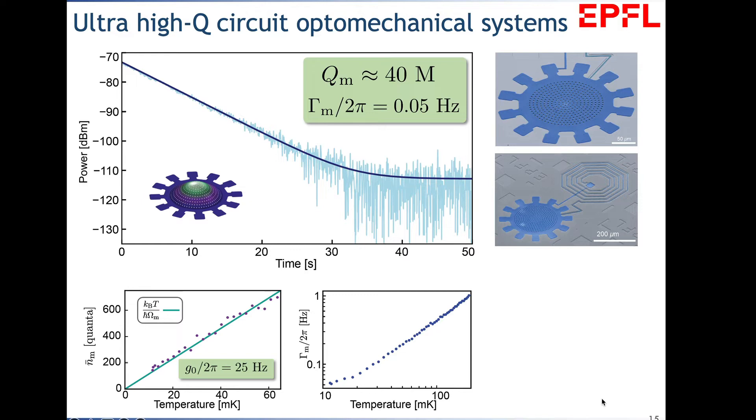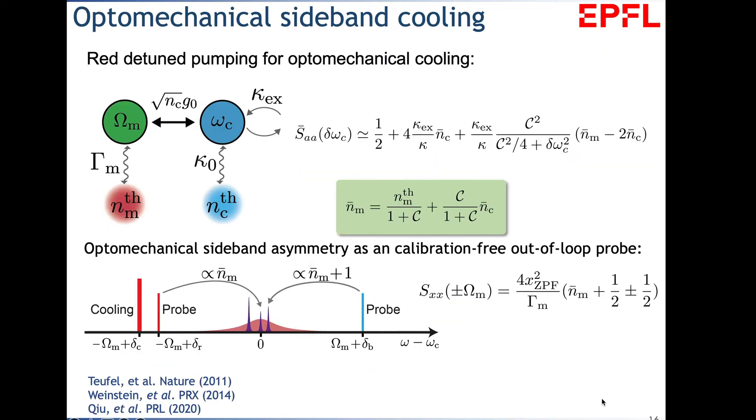How do we directly measure thermal decoherence? We wanted to ground state cool the mechanical oscillator and see how it heats up. We use sideband cooling with one strong cooling tone and two probe tones, one red side, one blue side. They scatter photons inside the cavity. If you have very little cavity occupation, you can measure directly the sideband asymmetry—scattered Stokes and anti-Stokes sidebands—and measure occupancy of the mechanical oscillator.